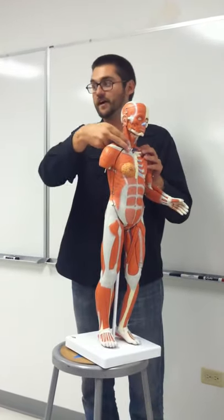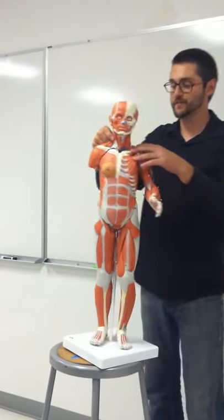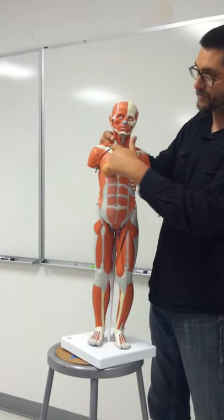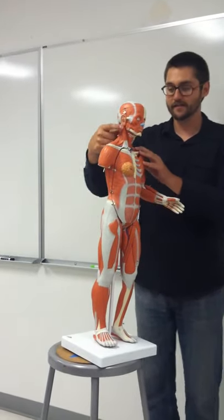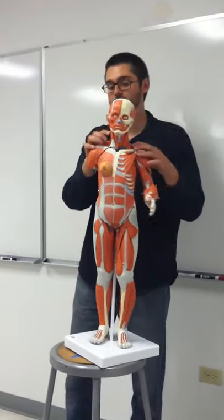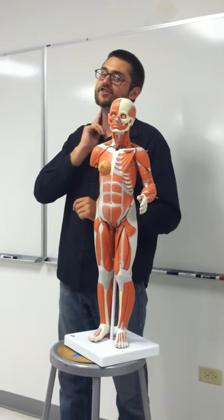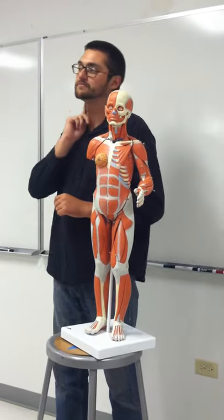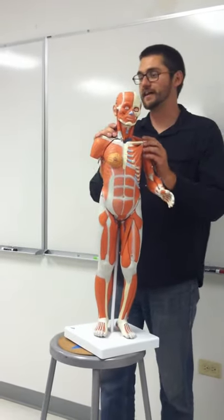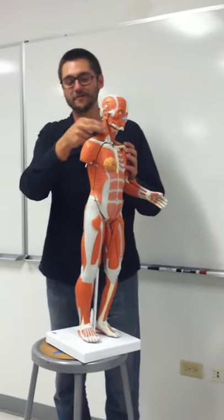This neck muscle is called sternocleidomastoid. It goes from the sternum to the clavicle to the mastoid process of the temporal bone. It's clinically important because your carotid artery and jugular veins are right next to sternocleidomastoid. So if you find sternocleidomastoid, the jugular veins are right next to it — useful for something like a jugular vein IV.